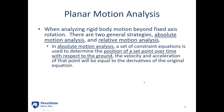In absolute motion analysis, a set of constraint equations is used to determine the position of a set point with respect to ground. Once we have that position equation, we take the derivative to find the velocity, and the derivative again to find acceleration. So we're going to be doing a lot of calculus with absolute motion analysis.